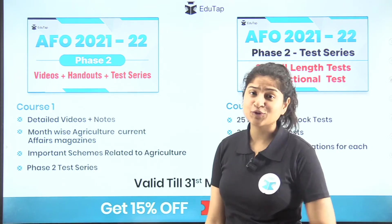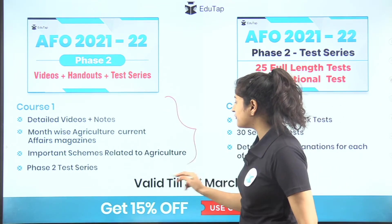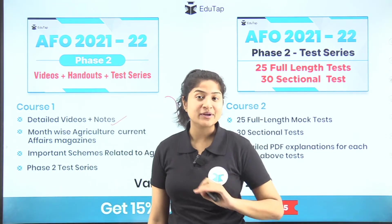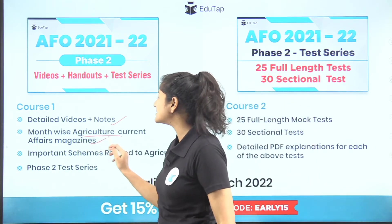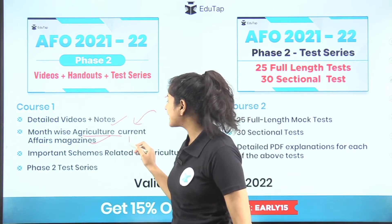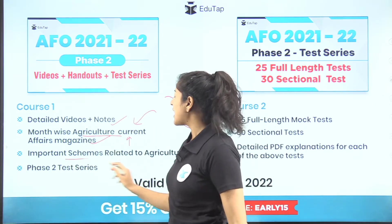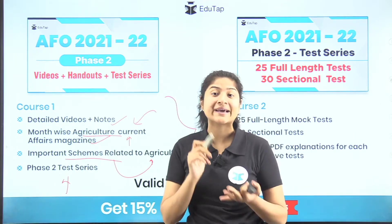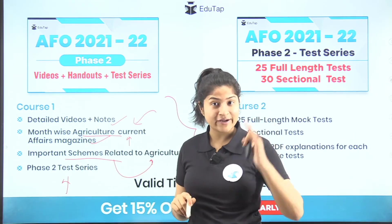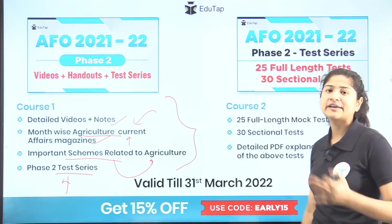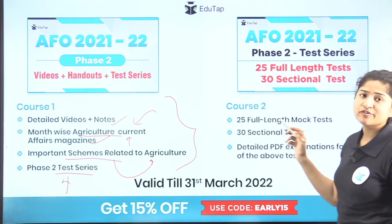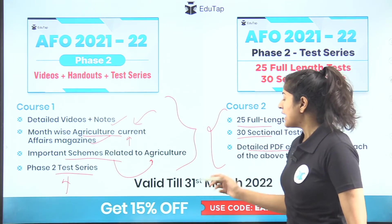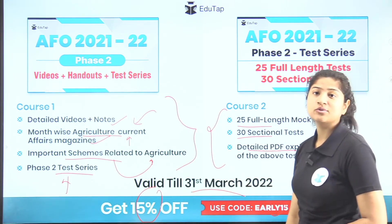Before the next question, with examinations near, we have two courses available. Course one covers detailed video content plus notes, summary sheets, worksheets, and quizzes after every chapter. It also includes a month-wise agriculture current affairs magazine, important agriculture schemes, and phase two test series. Course two is for revision and includes 25 full-length and 30 sectional mock tests with detailed PDF explanations. Get 15% off using code EARLY15, valid till 31st March 2022.